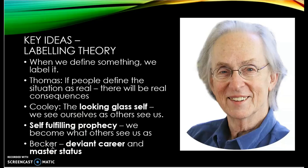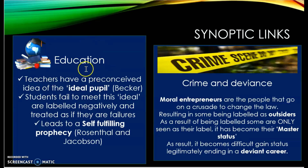Becker talks about deviant career and master status, which we'll explore via synoptic links. Within education, teachers had a preconceived idea of the ideal pupil — according to Becker, this was usually middle class, using an elaborate code, and well prepared. Students failing to meet this ideal were labelled negatively and treated as failures, leading to the conclusion that working-class students were labelled negatively, causing school failure and a self-fulfilling prophecy. However, we know some students can reject this label — something to remember when evaluating.